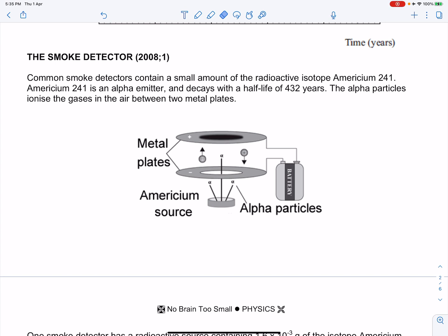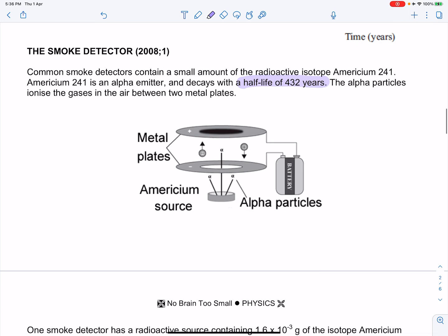Americium 241 is an alpha emitter and decays with a half-life of 432 years. The alpha particles ionize the gases in the air between the two metal plates.